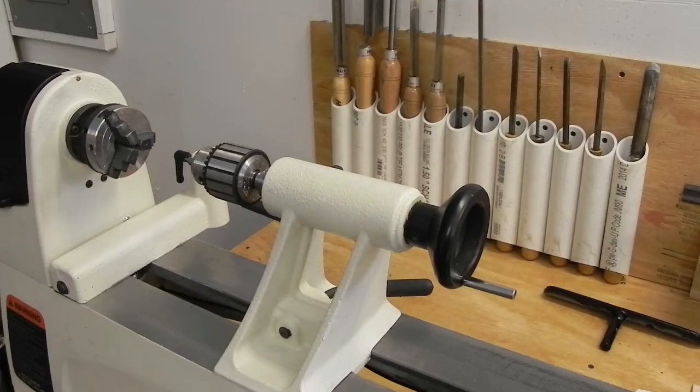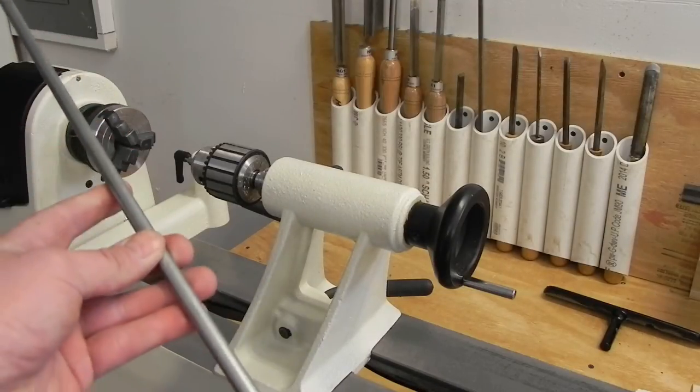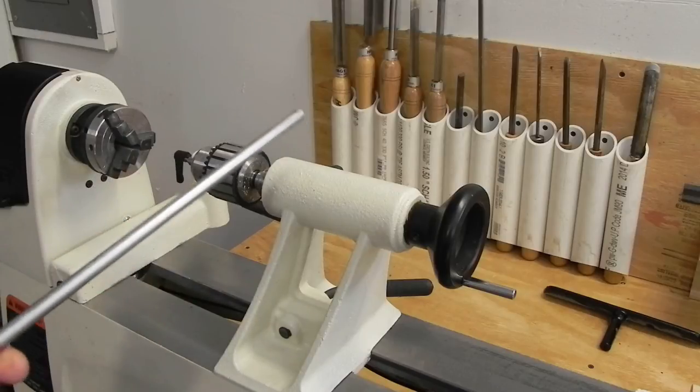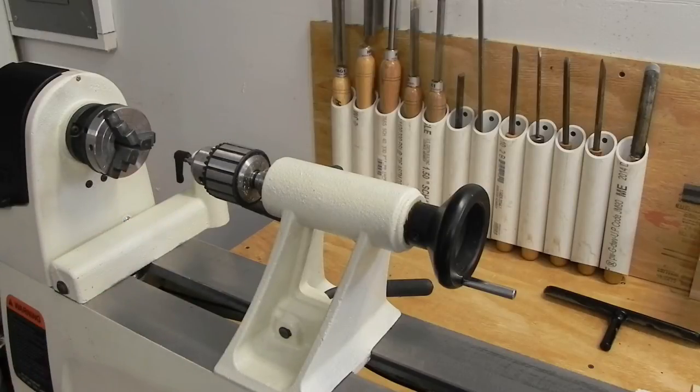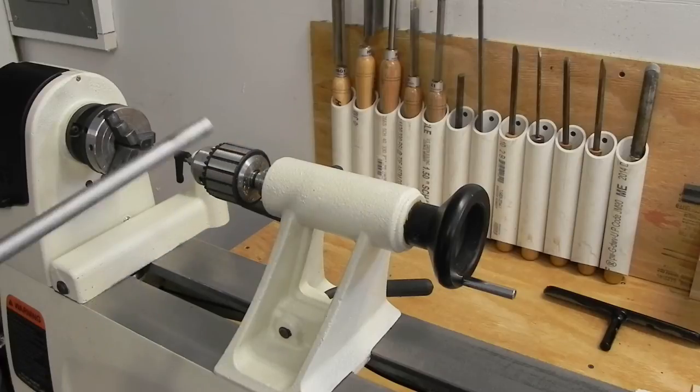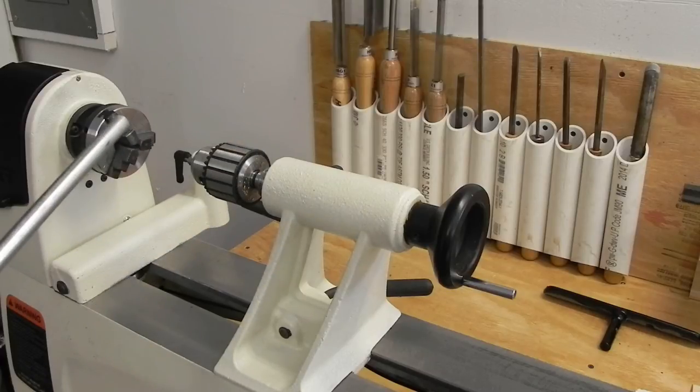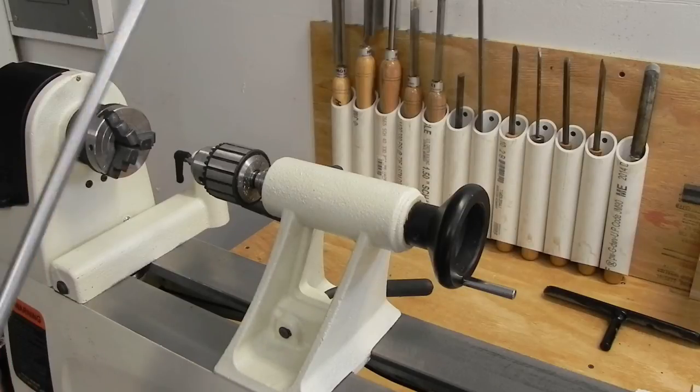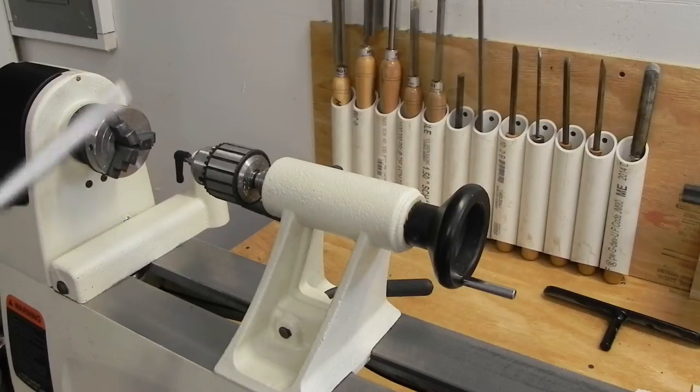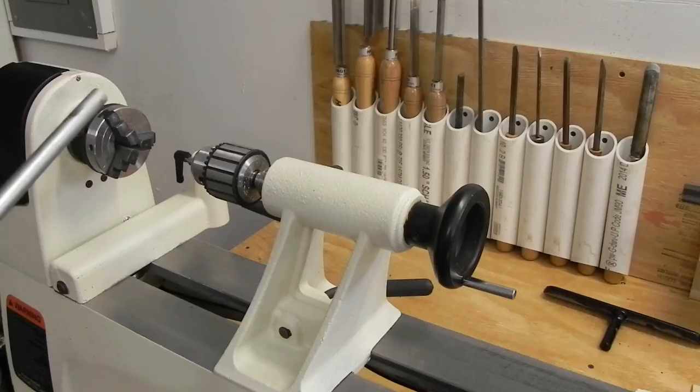I'm going to talk about how to make cheap mandrels for turning carbon fiber and foam core. I went to the hardware store and got a piece of 3/8 inch solid steel rod. This was about $6.50 for three feet.